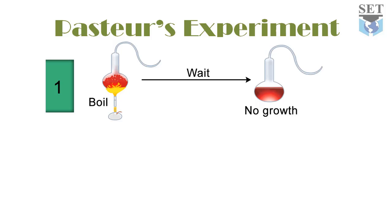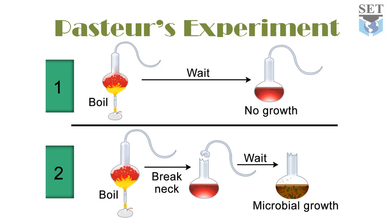To prove his point, Pasteur broke the curved necks so that contaminated air could now reach directly into the infusion. It was observed that microorganisms were produced within 48 hours. This proved that if no microorganisms or their spores were allowed to reach the infusion, no life could be produced. He rejected the idea of spontaneous generation. The commission decided in favor of biogenesis, ending the argument once and for all, and biogenesis was accepted by the whole world.